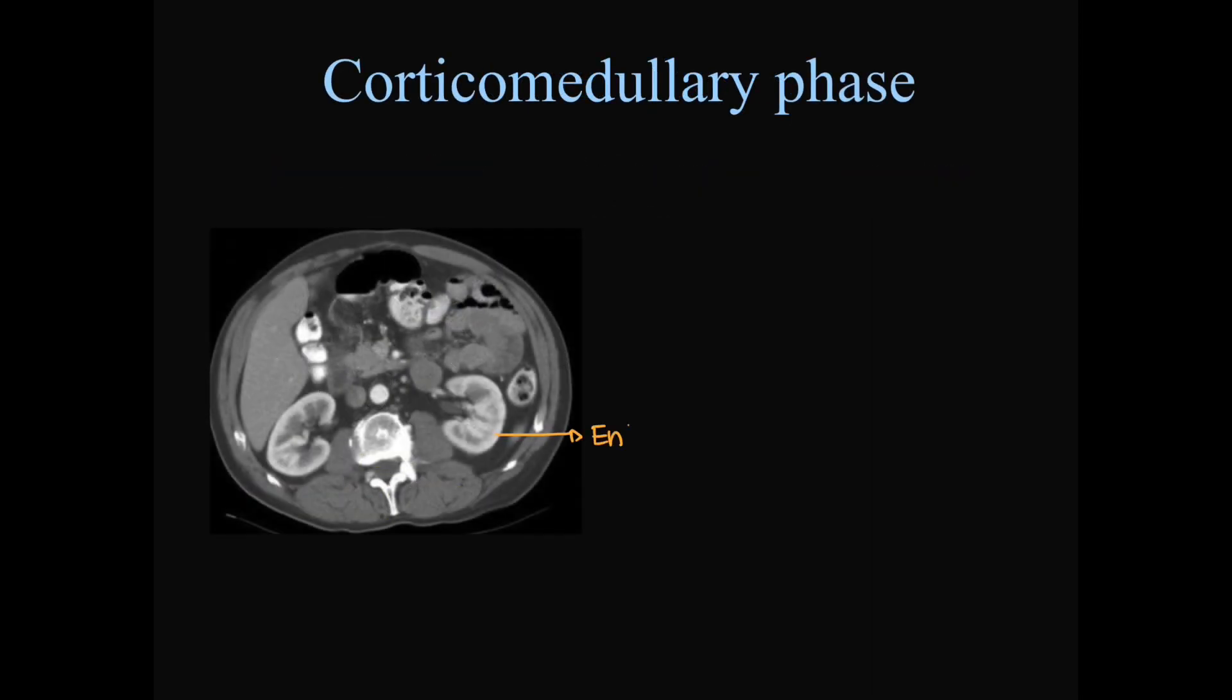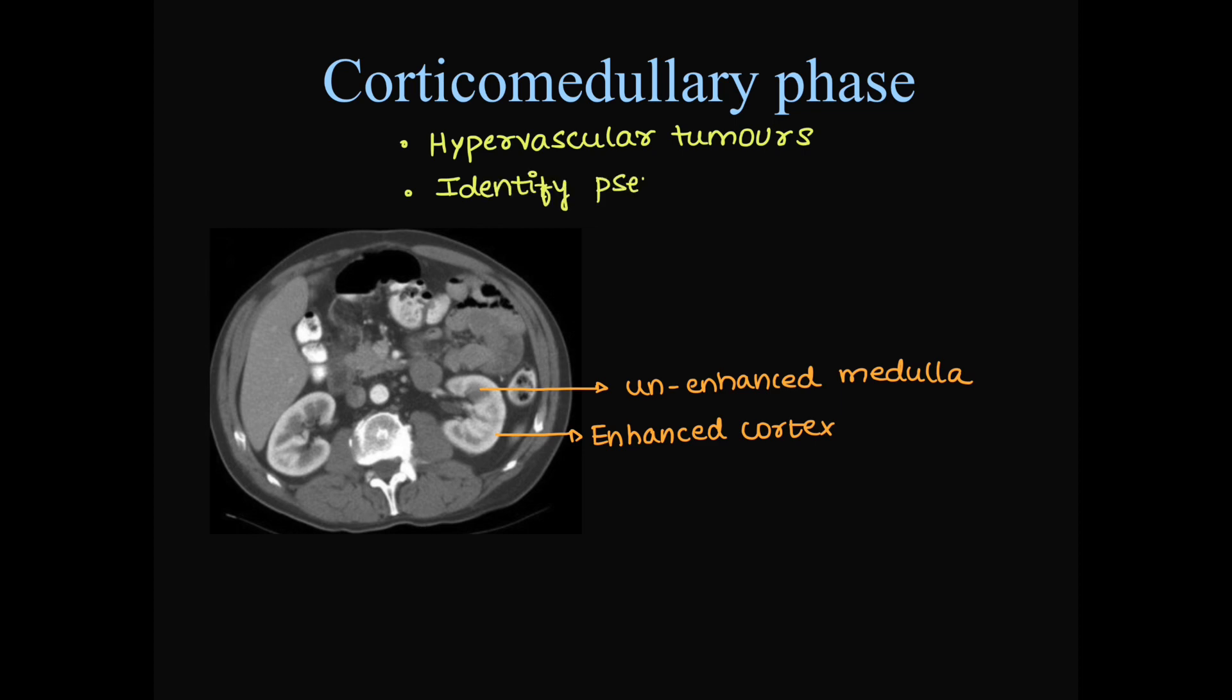Let's see each phase in detail. This is how the corticomedullary phase looks like. There is enhanced cortex, unenhanced medulla. Hence, they can be very well differentiated from each other. Also, vascular structures are seen and hypervascular tumors can be identified. We can identify pseudotumors or normal variants of the renal parenchyma. Also, we can see tumor extension into renal veins in this phase.